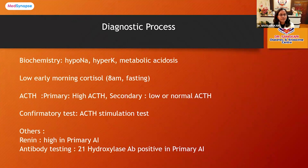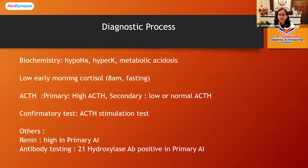To confirm a low cortisol level, we do an early morning cortisol at 8 a.m. in a fasting state. Cortisol is secreted in a diurnal variation — highest in the morning upon waking and lowest at night. In adrenal insufficiency, there is also a biochemical imbalance with hyponatremia, hyperkalemia, and metabolic acidosis. To delineate between primary and secondary causes, we measure ACTH: in primary adrenal insufficiency ACTH is elevated, whereas in secondary causes ACTH is suppressed.